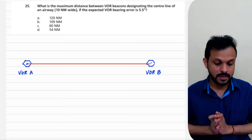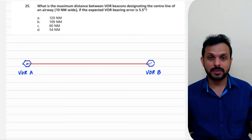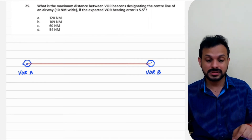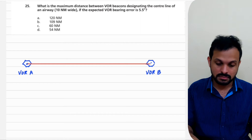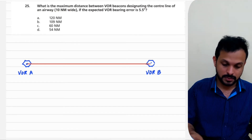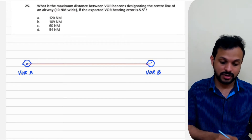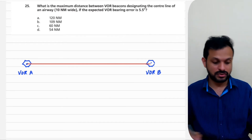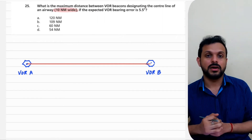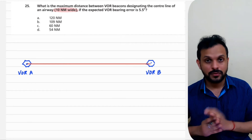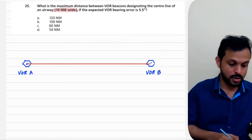With the understanding from the previous question, let's approach this one. The airway is defined by the VORs, and what they've asked is: what is the maximum distance between VOR beacons? We need to find this distance from VOR A all the way to VOR B. Additionally, they define the center line of an airway which is 10 nautical miles wide — this is the standard ICAO recommended width — meaning it is 5 nautical miles on either side of the designated center line.